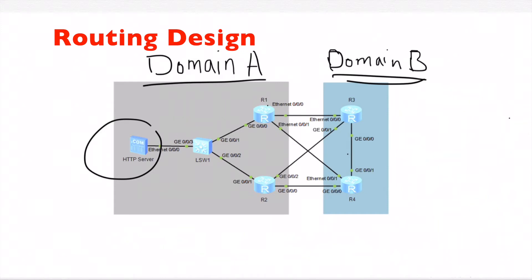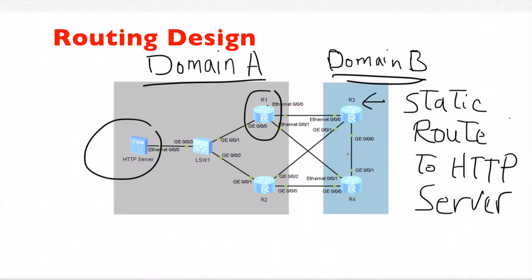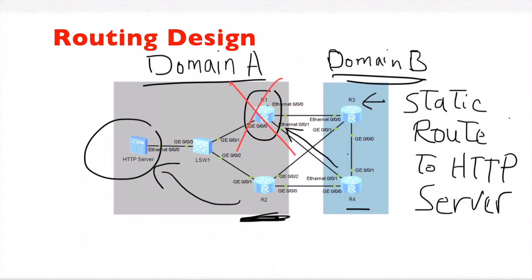Domain B and domain A decided not to use dynamic protocols. They use static routing. In R3, a static route is configured to the HTTP server with the next-hop being R1 — the IP address of the Ethernet trunk configured at R1 — and the same for R4. If there is a failure at R1, R2 will become the active and main gateway for the HTTP server, so we have to provide redundancy for the static routes.